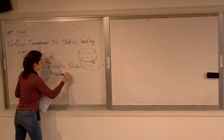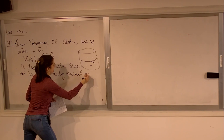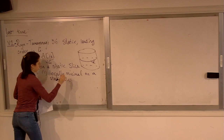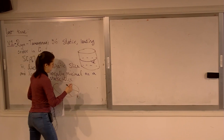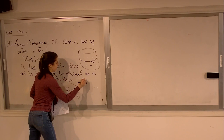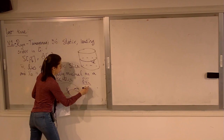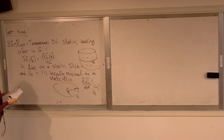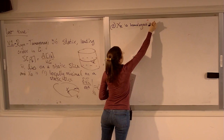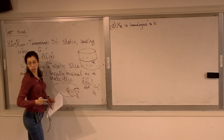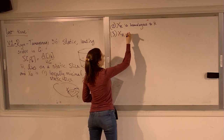It's locally minimal — meaning it's a local minimum on a static slice. The variations of the area element of the surface with respect to the normal is zero. That's the first requirement. The second requirement is X_R is homologous to R, meaning there's an H_R whose boundary is the union of R and X_R. And finally, if there's more than one such surface, X_R is the least area surface satisfying conditions 1 and 2.